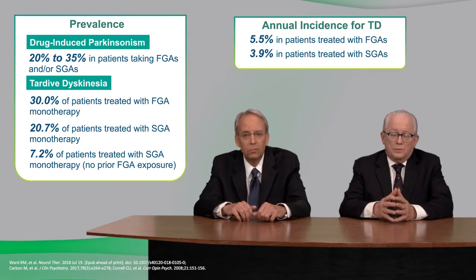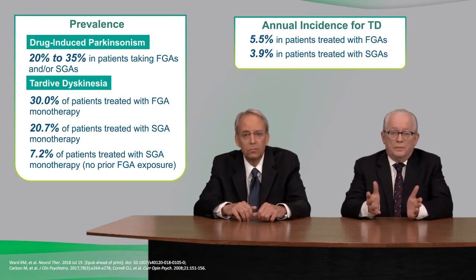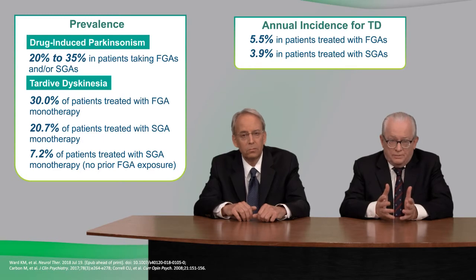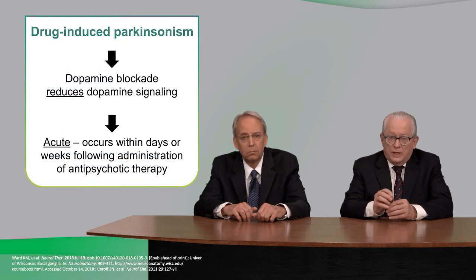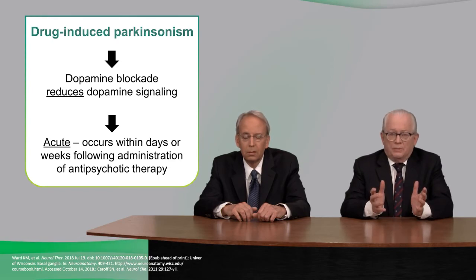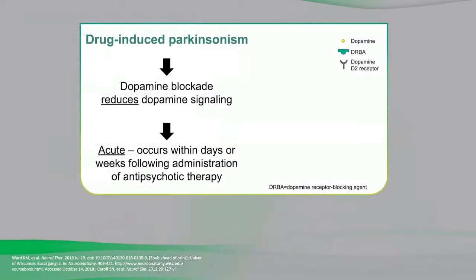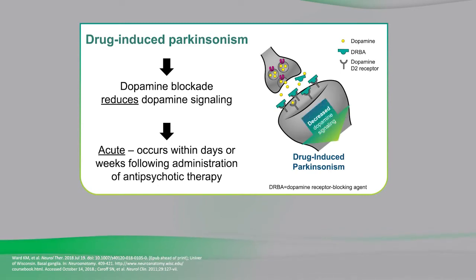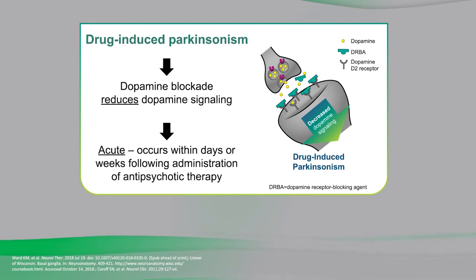As you mentioned, drug-induced Parkinsonism and TD require different treatment regimens. So, let's take a look at why that would be the case based on the mechanisms thought to be involved in each condition. Drug-induced Parkinsonism and TD are actually the result of opposite mechanisms on the dopamine pathway. When you consider the mechanism of a dopamine receptor blocking agent, such as an antipsychotic, it makes sense that the dopamine blockade could reduce dopamine signaling and give rise to Parkinsonism. This mechanism also explains why these symptoms would occur within days or weeks following the administration of the antipsychotic.